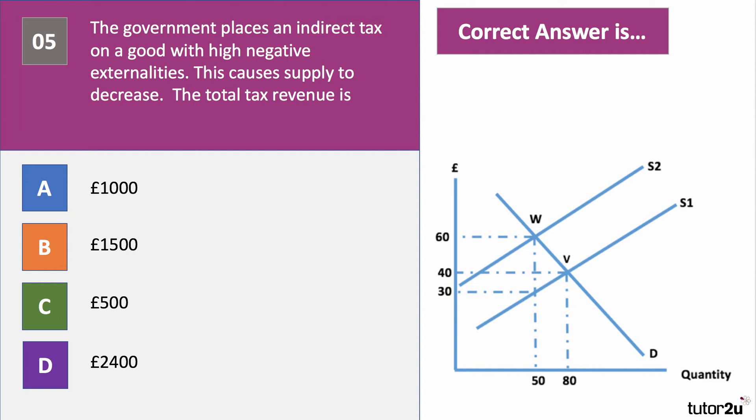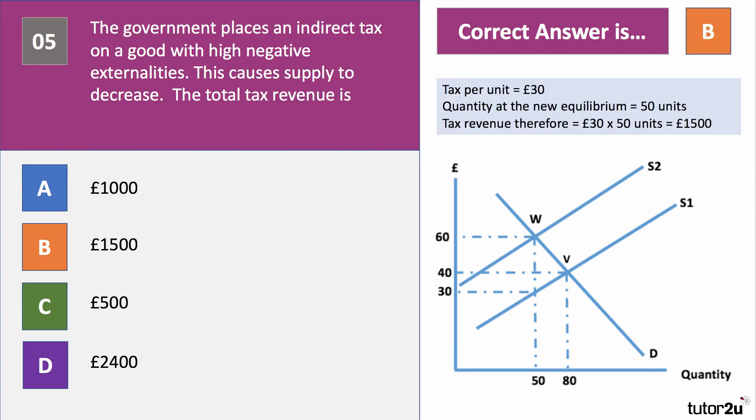The tax has shifted supply from S1 to S2. The tax per unit is £30 — the vertical distance between the two supply curves, which we can read off the y-axis. The quantity goes down from 80 to 50 units. Tax revenue is therefore £30 per unit times 50, which gives £1,500 of tax revenue to the government.